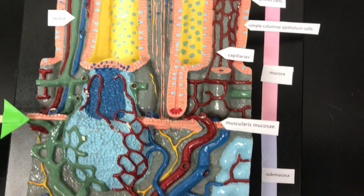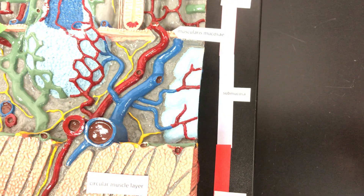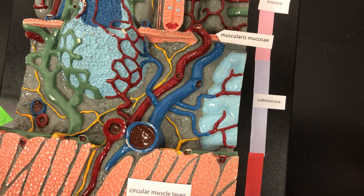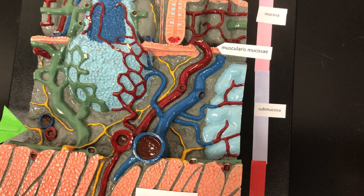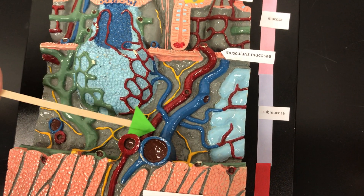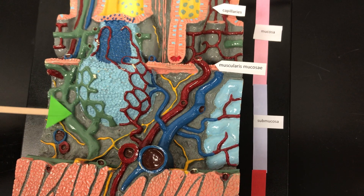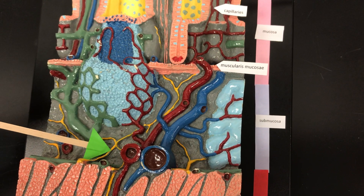Underneath the mucosa layer is going to be the submucosa layer. It contains glands, larger blood vessels, lymphatic structures, and even nerves.